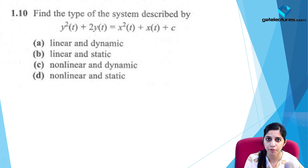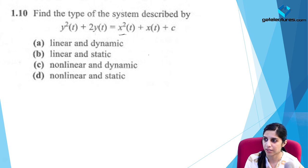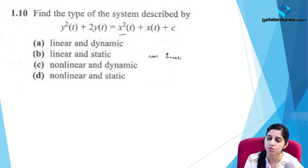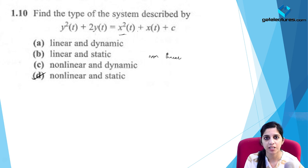For the equation y²(t) + 2y(t) = x²(t) + x(t) + c: since there is a square term the system is non-linear. Since all arguments are simply t with no past or future values, there is no memory and the system is static. The correct option is B: non-linear and static.